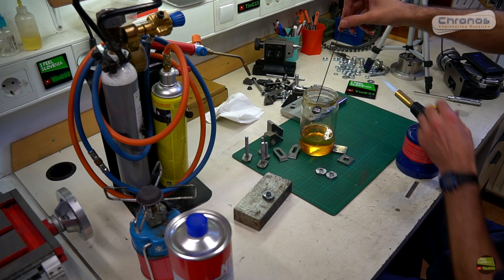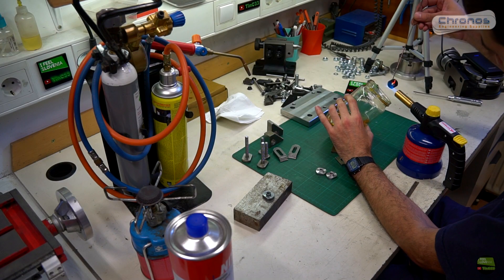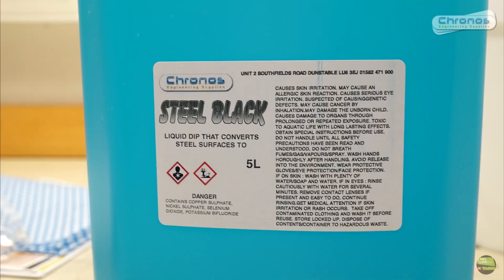Most common is hot blacking using temperature and oil, and the other is cold blacking using special solution. So far I've only been blacking with heating and oil, but now I got special blacking solution from UK store Chronos.